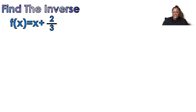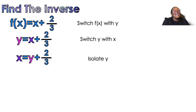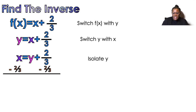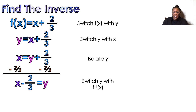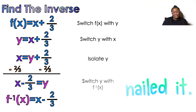Example two: f(x) = x + 2/3. Switch f(x) with y: y = x + 2/3. Switch y with x: x = y + 2/3. Isolate y — if it were y + 2 you'd subtract 2 from both sides, so subtract 2/3 from both sides. That gives x − 2/3 = y. Use proper notation: f⁻¹(x) = x − 2/3.